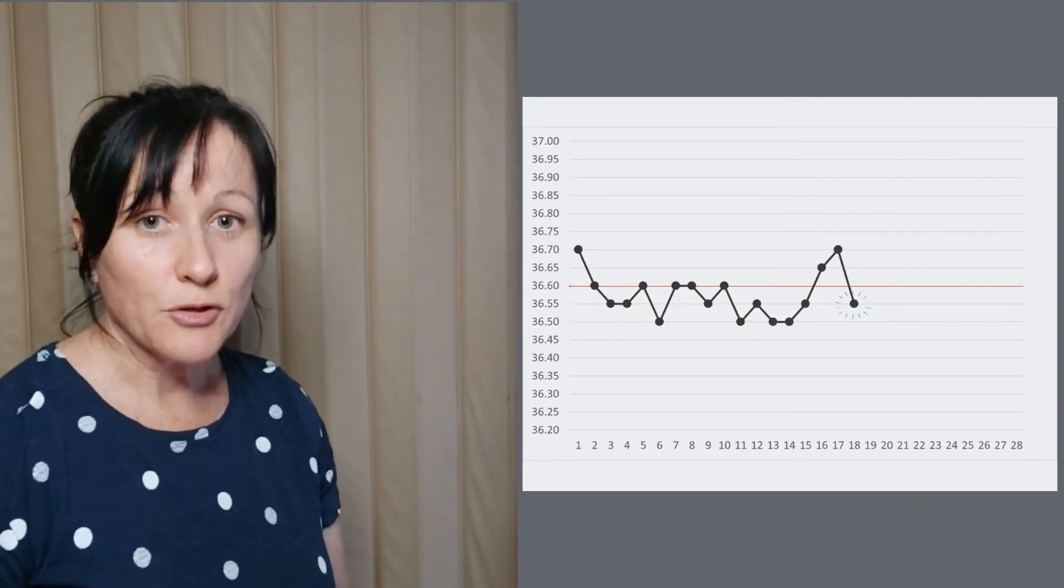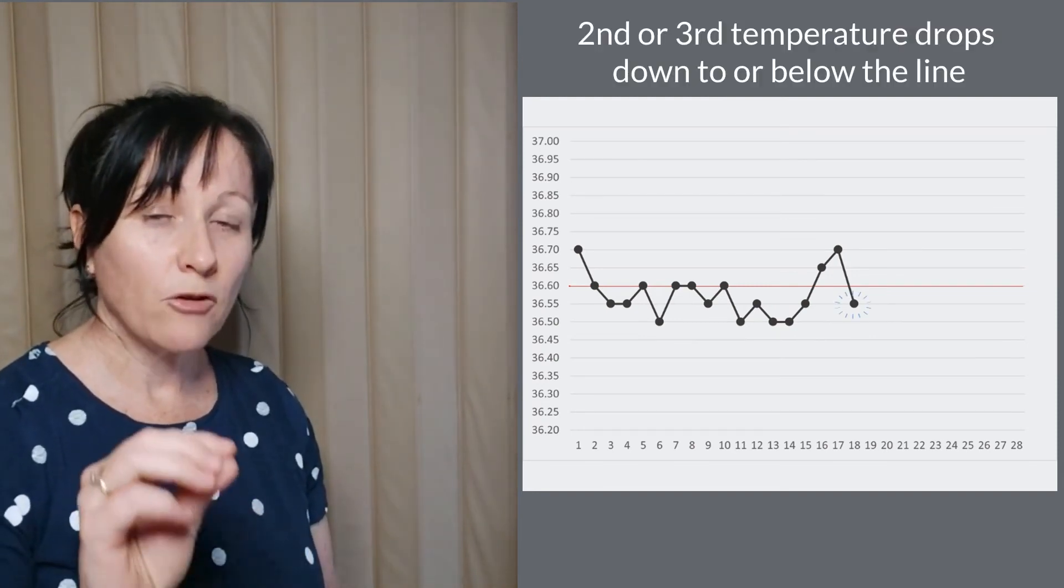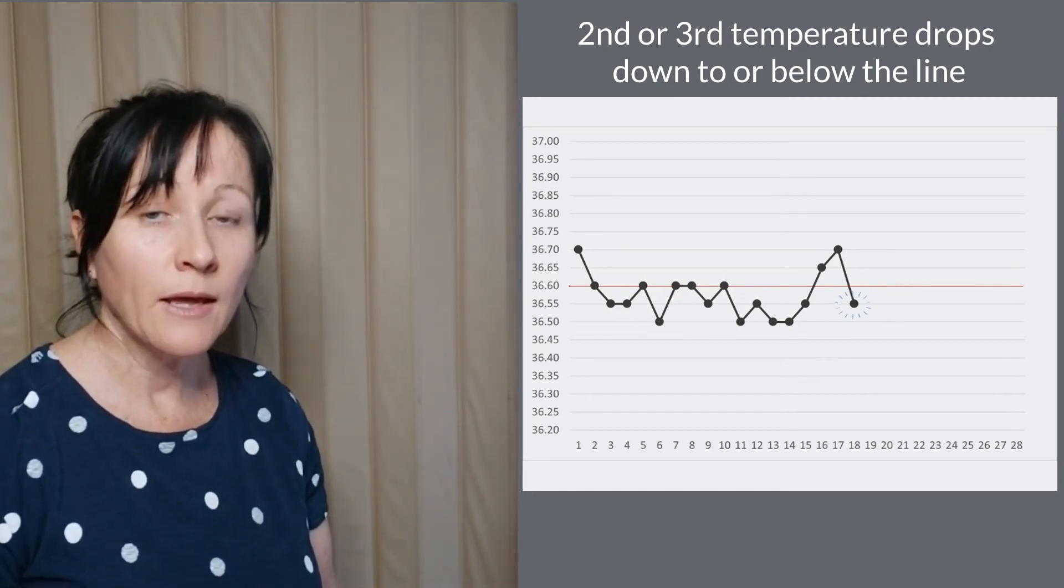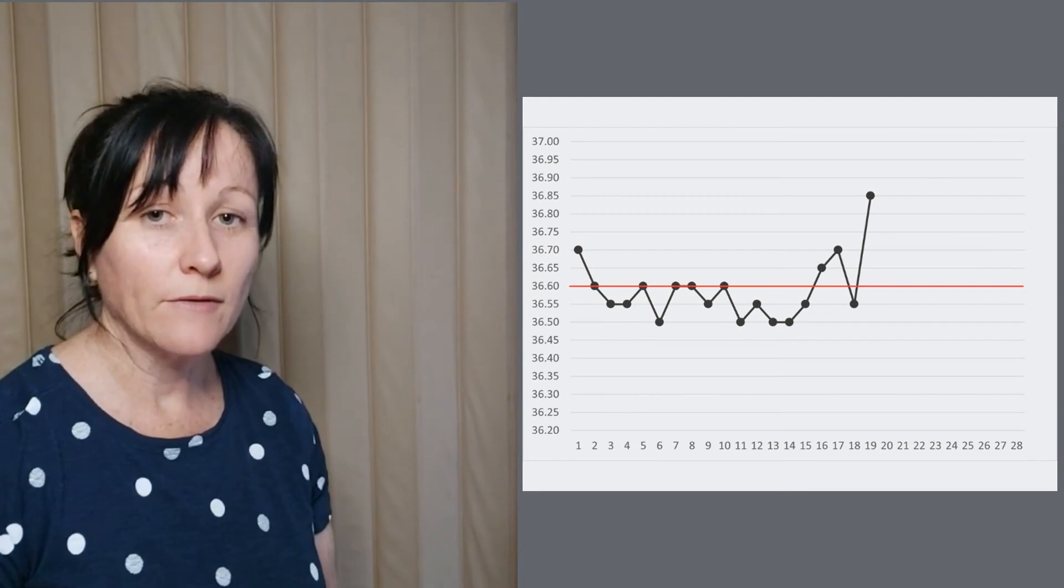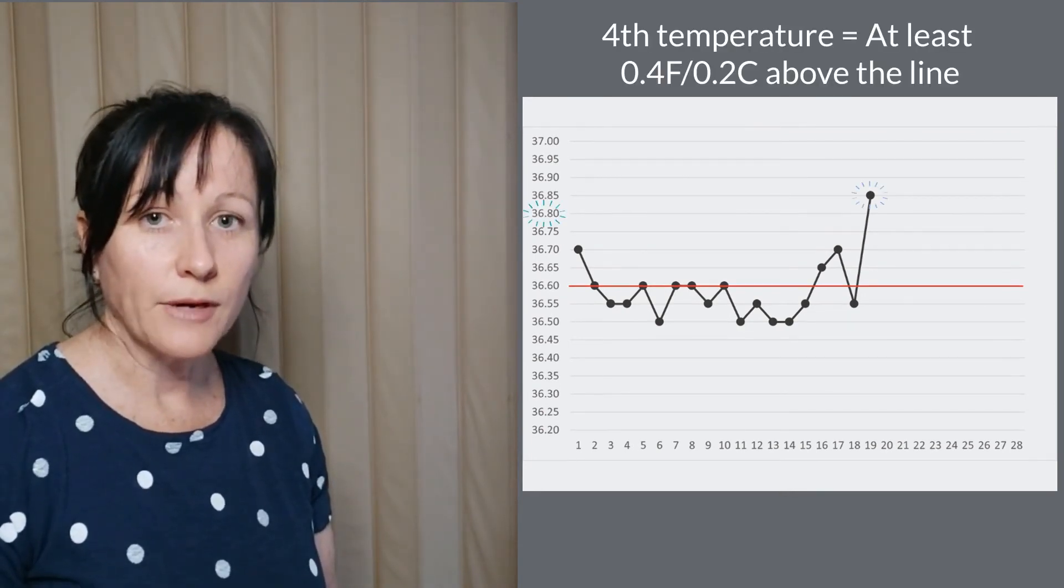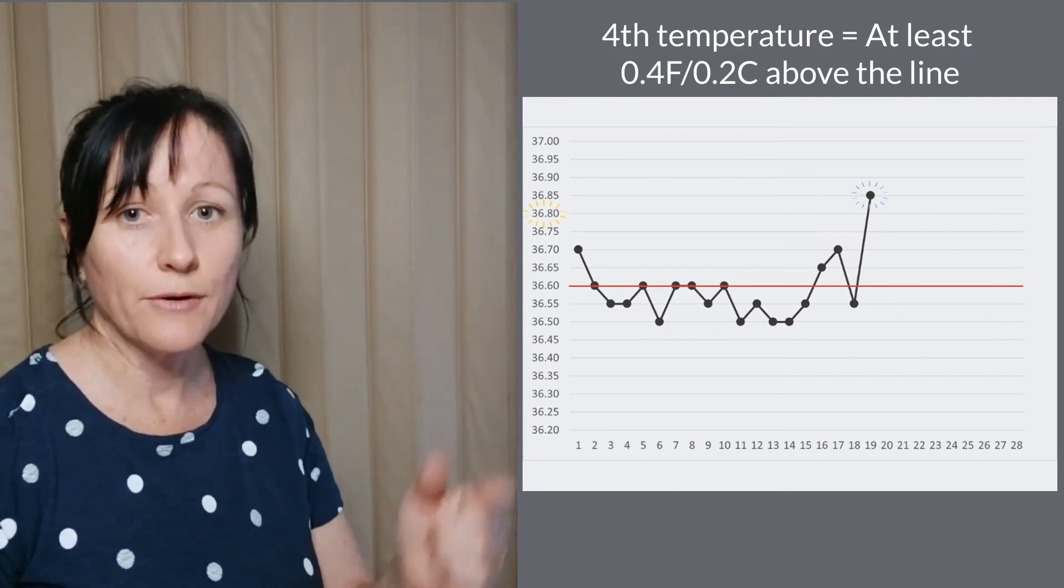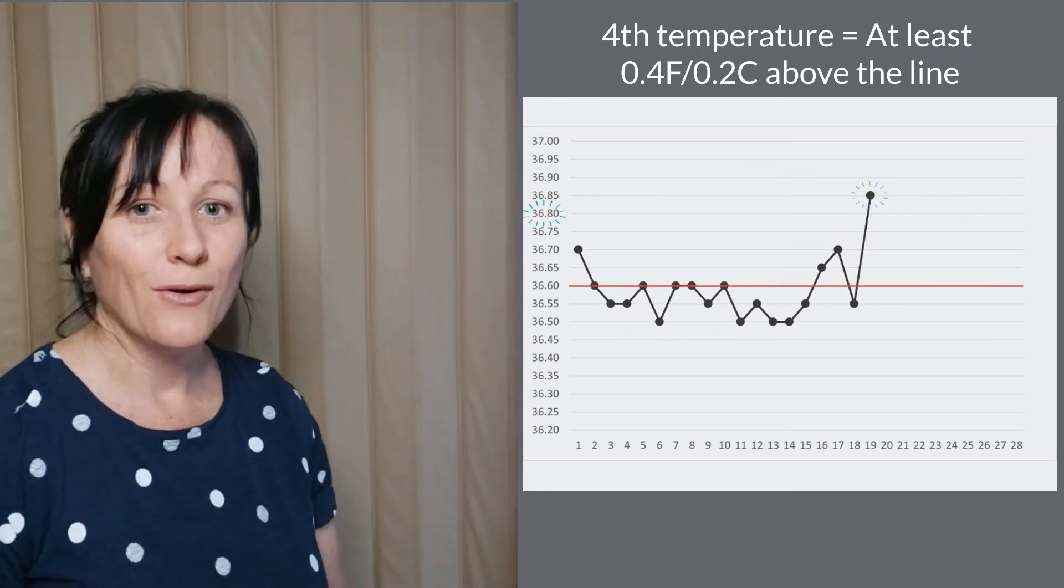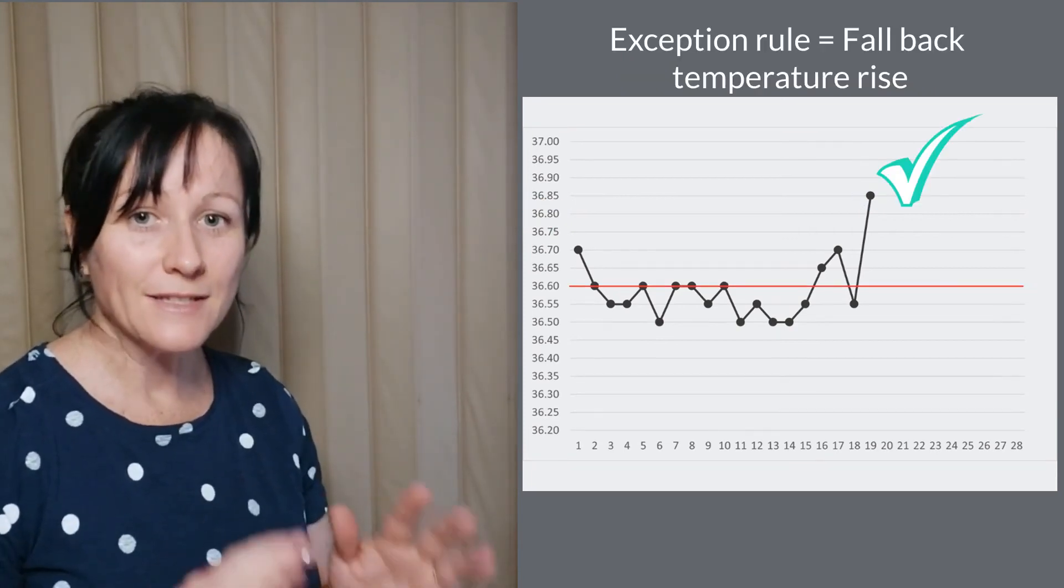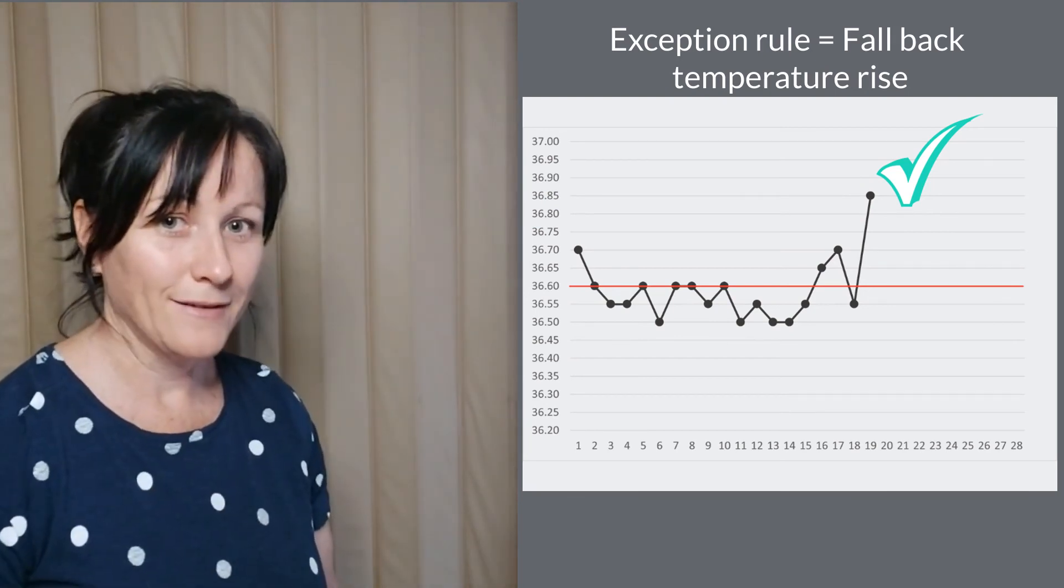Another exception rule is if the second or third day drops to or below the cover line as shown here. Now again, you would need to wait for a fourth day. If the fourth temperature reaches that value of at least 0.4 degrees Fahrenheit or 0.2 degrees Celsius above the line, it's still a valid temperature shift. This is known as a fallback temperature rise.